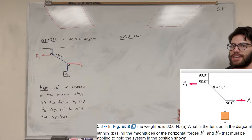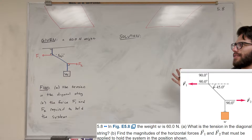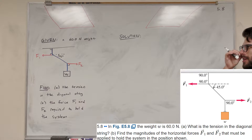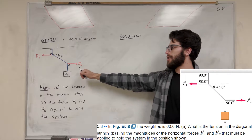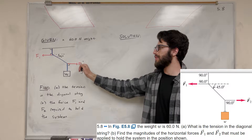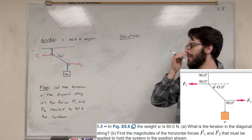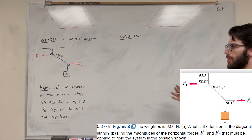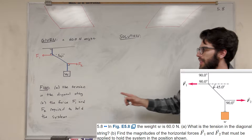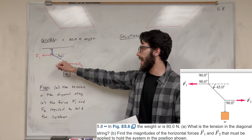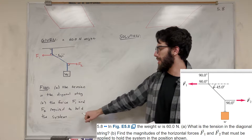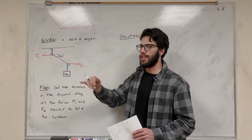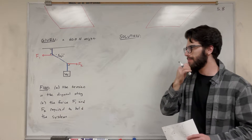What's up Kyle Gang? Welcome back to physics. So let's go ahead and solve this problem. We've got a 60 Newton weight held by a string that has two forces pulling on it in either direction. For part A our goal is to find the tension in the diagonal part of the string, and then part B is to find the forces required to hold the system like this.